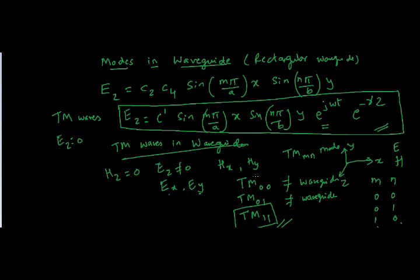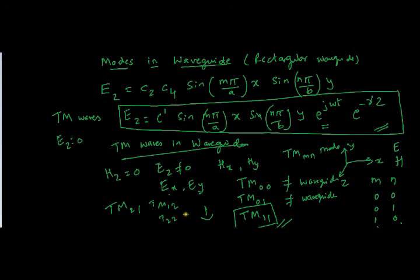The next thing is we need to see what is another term called dominant mode, which is used widely in a waveguide context. We know that TM11 is the lowest mode which can exist, and the higher modes also will exist after this — that is TM21, TM12, etc. So let's define what is dominant mode in a waveguide.